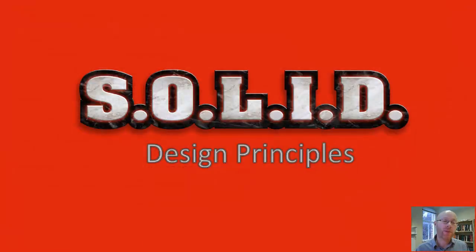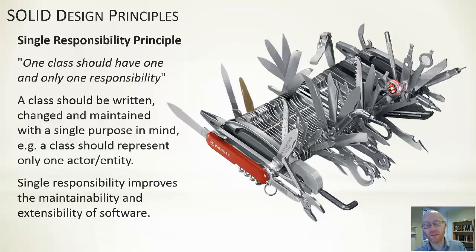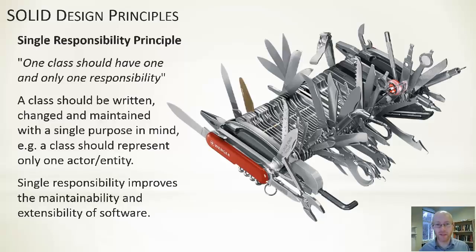Next is the SOLID design principles — there are five. Starting with S: the Single Responsibility Principle. It says that one class should have one and only one responsibility. A class should be written, changed, and maintained with a single purpose in mind. Single responsibility improves the maintainability and extensibility of software. If I want a class that does a certain function, that's what the class should do — it shouldn't also do something else, and something else, and something else on top of that.